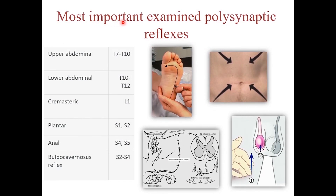Regarding polysynaptic reflexes, some of the most important examined reflexes are the upper and lower abdominal reflexes, which can be tested by lightly stroking the abdominal wall diagonally towards the umbilicus, leading to contraction of the abdominal wall and twitching of the umbilicus toward the stimulus. Also the cremasteric reflex, tested by stroking the inner skin of the thigh, which leads to pull-up of the ipsilateral testicle due to contraction of the cremasteric muscle. The plantar reflex is tested by applying a sharp instrument on the lateral aspect of the sole of the foot, leading to plantar flexion of the toes. The anal reflex is tested by stroking the skin around the anus, leading to contraction of the external anal sphincter.